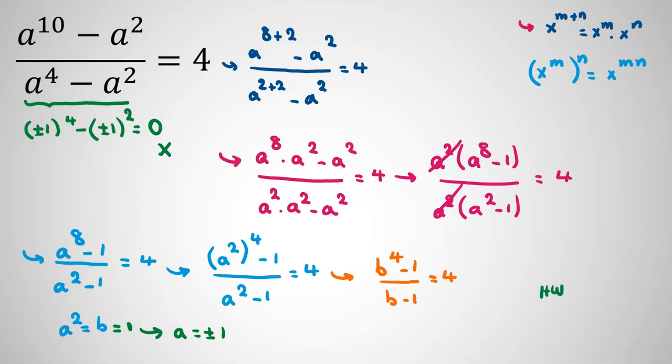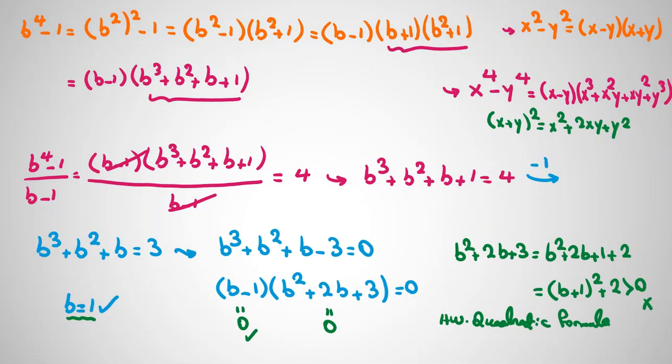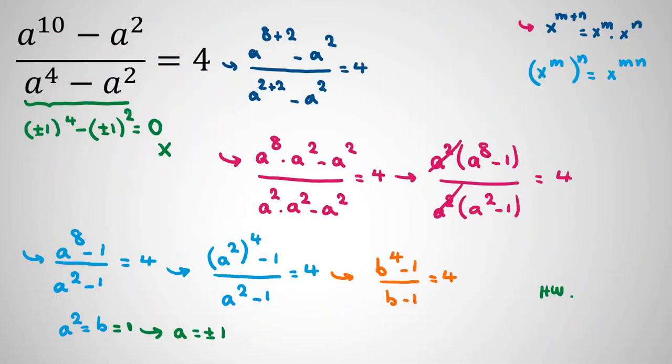As homework, try solving in complex numbers. The factor b² + 2b + 3 has two complex roots, which will give corresponding complex values for a. Try to solve for complex numbers and comment your answers below the video.